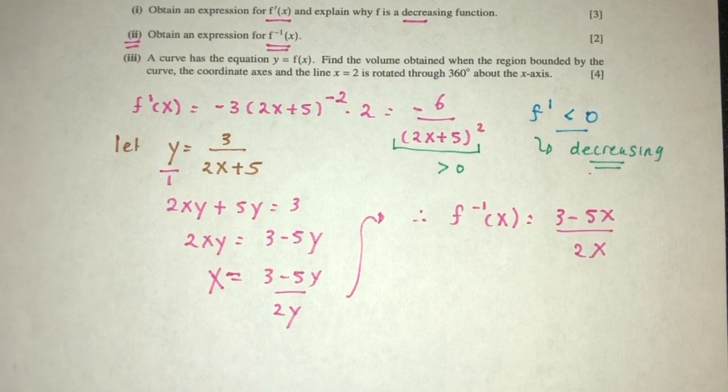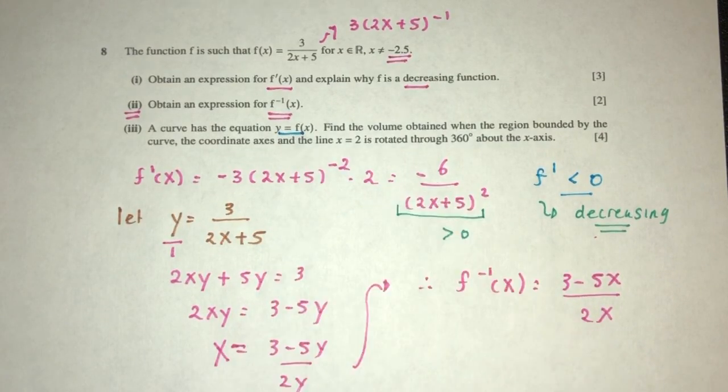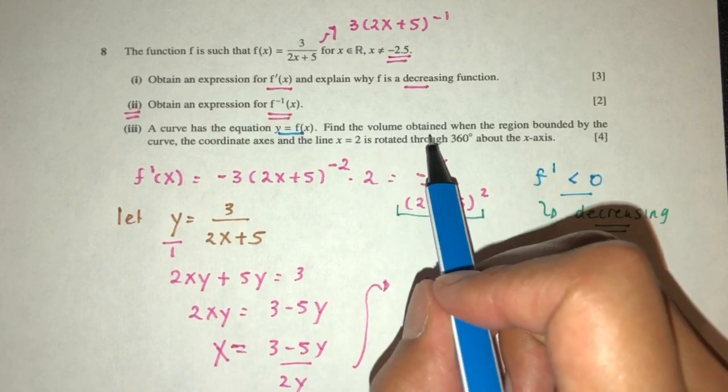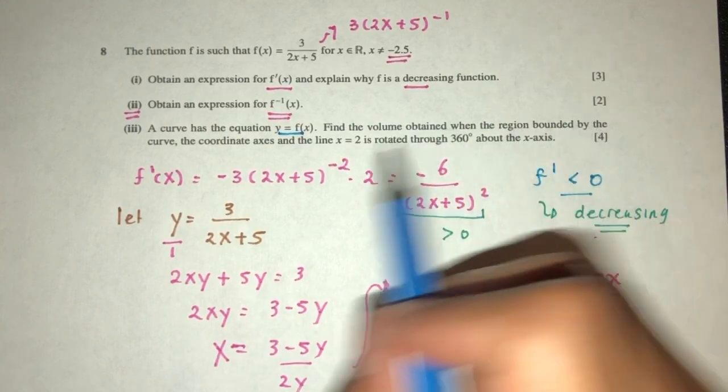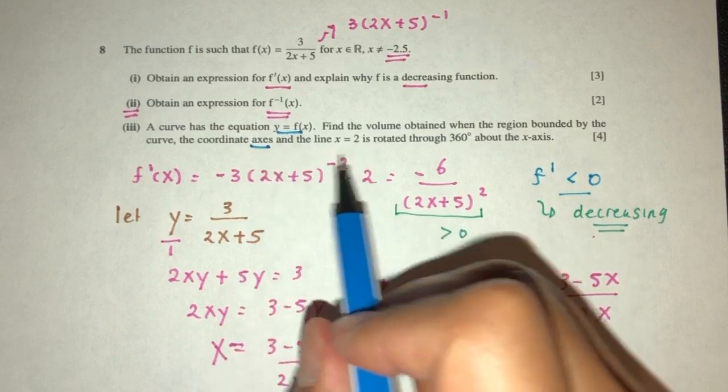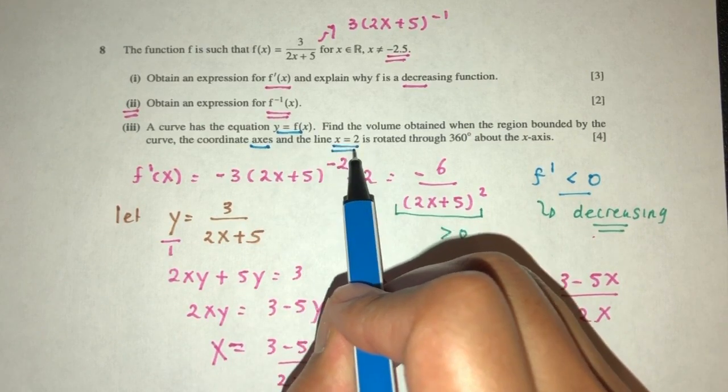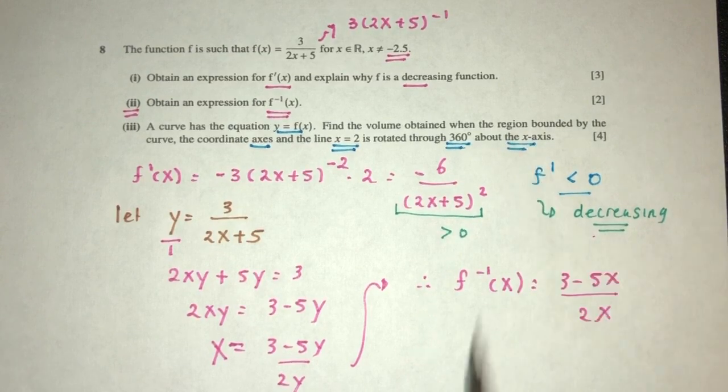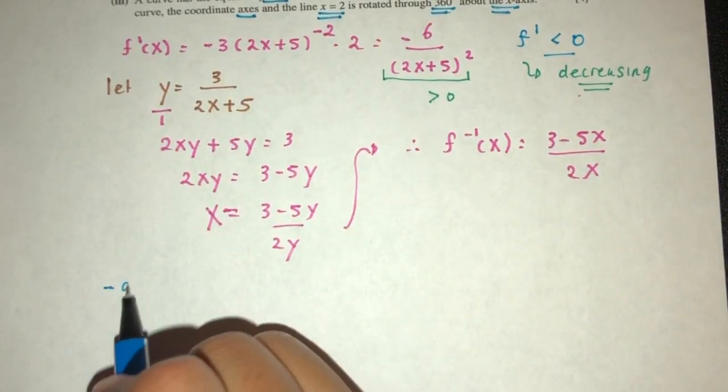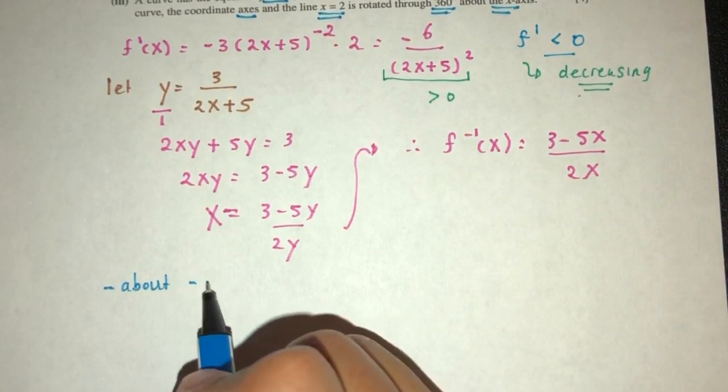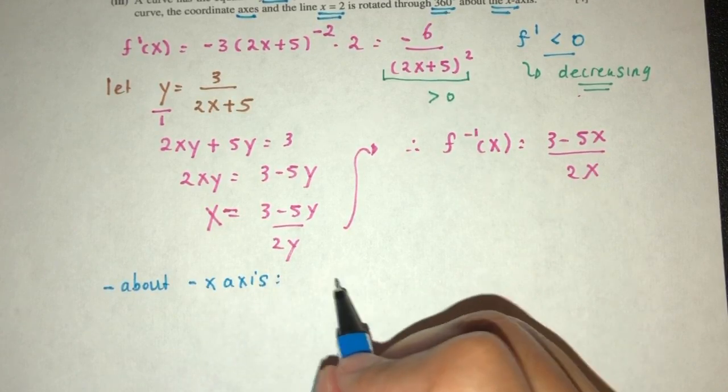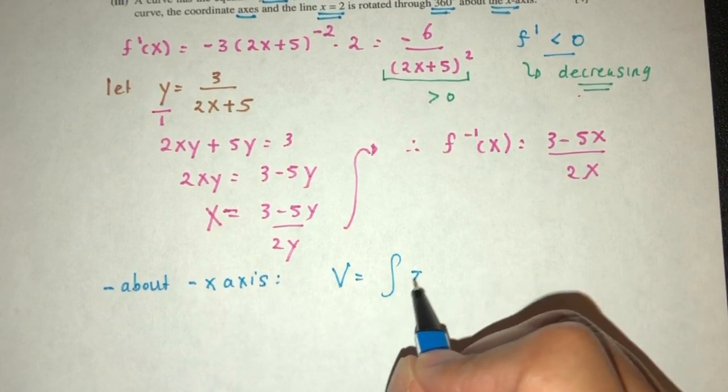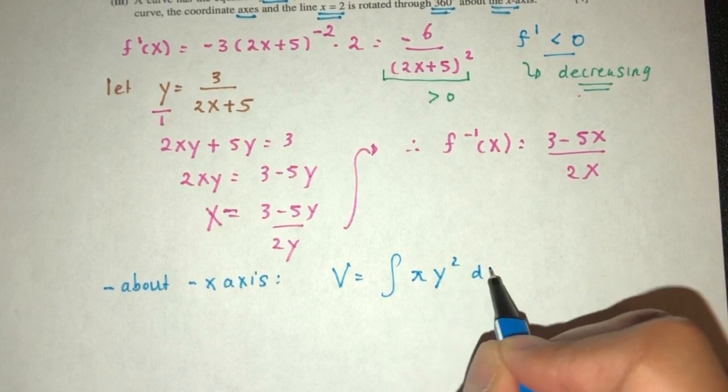Now for part three, a curve of equation y equal to f of x. We have to find the volume obtained when the region bounded by the curve on the axis, and this line is rotated about the x-axis. About x-axis, what formula we have to use again. That should be volume has to be integration, y squared with respect to dx.